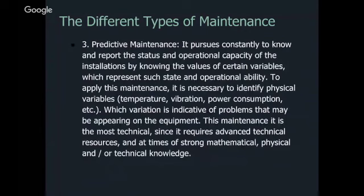Third is predictive maintenance. Its main pursuit is to constantly know and report the status and operational capacity of installations by knowing the values of certain variables — temperature, vibration, power consumption, etc. — which are indicative of problems that may be appearing on equipment. This is the most technical maintenance type, requiring advanced technical resources. A great example would be load balancing, performing a heat analysis on sub-panels or switchgear, doing a coordination study, pulling off dead fronts, amping out things, or using a thermal heat gun.